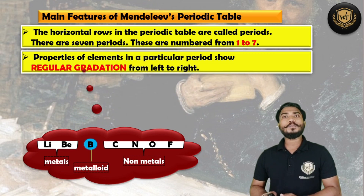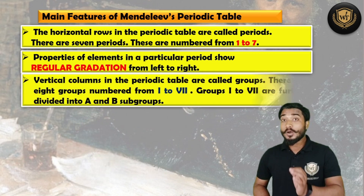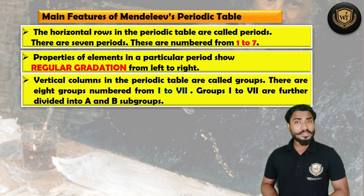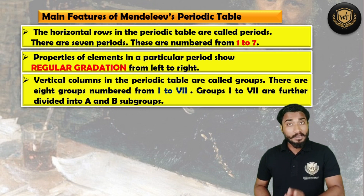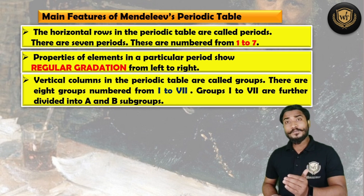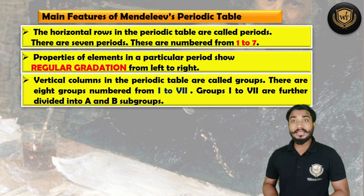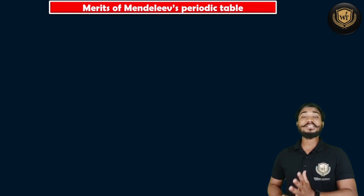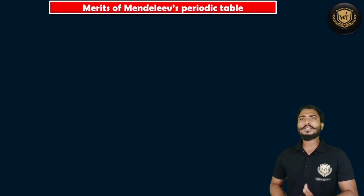If you talk about groups in Mendeleev's periodic table, the vertical columns were termed as groups. Mendeleev was the first personality who successfully arranged all 63 elements, and hence there were a few positive points of his table — we call them the merits of his table. These merits of Mendeleev's periodic table carry two marks in your board examination.